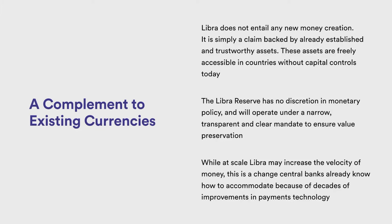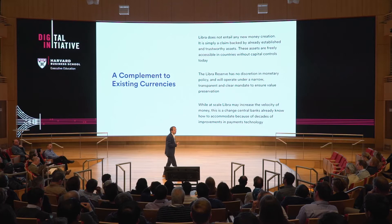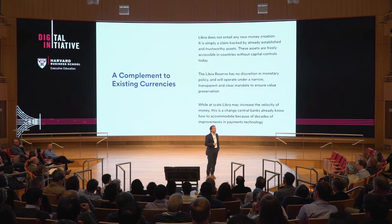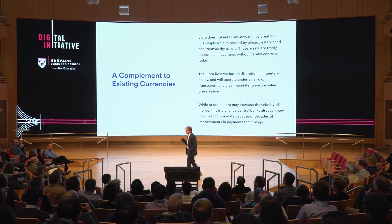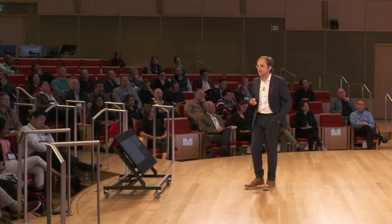There's a lot of confusion in the press about headlines suggesting Libra is designed to compete with fiat currency — that couldn't be further from the truth. The entire design of Libra is to be a complement to existing currency and enable a new layer of applications and transactions on top of it. It's backed by assets governed, created, and maintained by central banks. The vision for the entire ecosystem is one of public-private partnerships, where the public sector is still fully in control of the underlying assets and monetary policy. That's why the reserve has no discretion in monetary policy and operates under a very narrow mandate of value preservation for users.